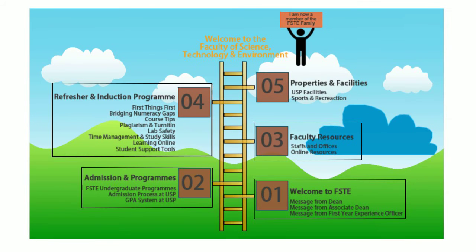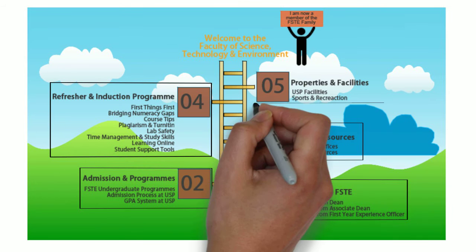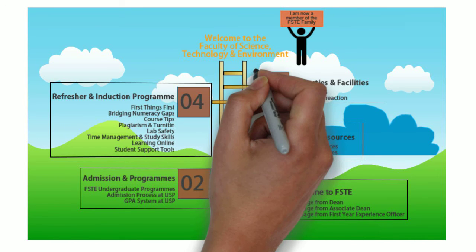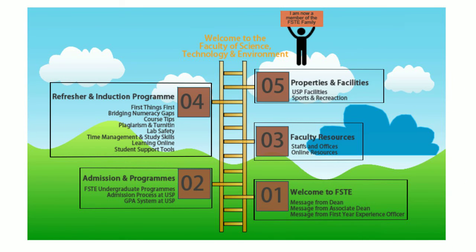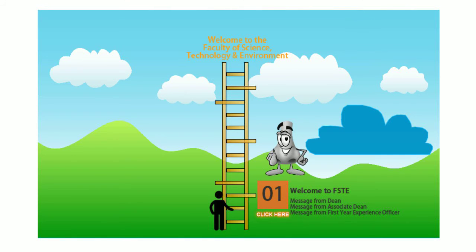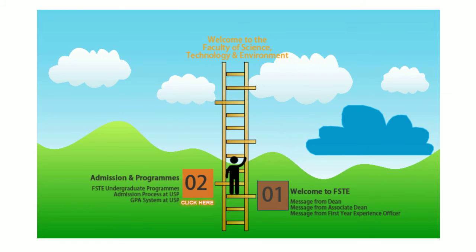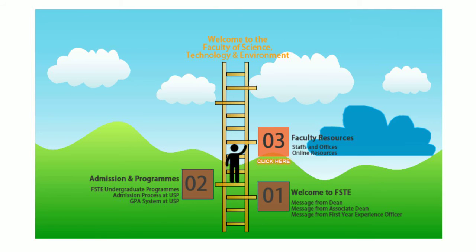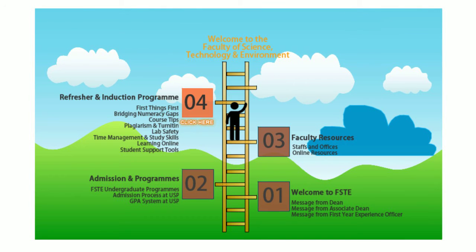The final section of the online orientation is the properties and facilities section, where you will get introduced to facilities at USP and the sports and recreation centers here at USP. To successfully complete the online orientation, you are to go through each of the sections, and a new section will be unlocked after completing the prior section.